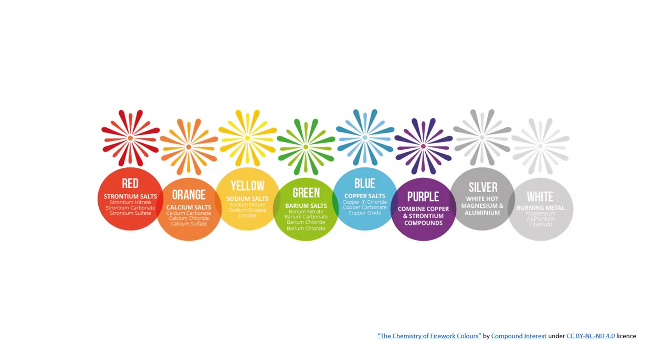The different colors in fireworks is due to the presence of different metal salts. For example, the yellow light we see in fireworks is actually the atomic emissions of sodium.